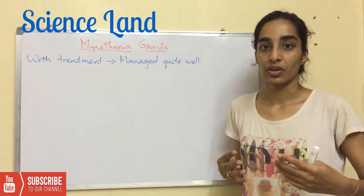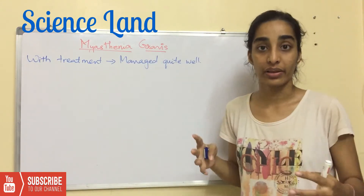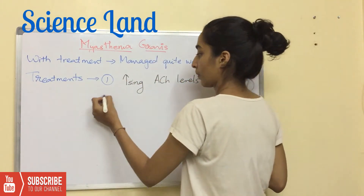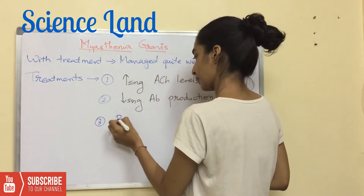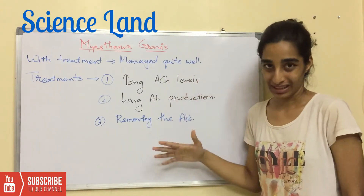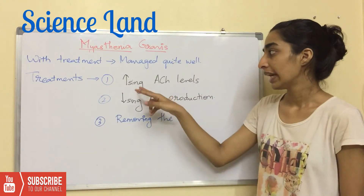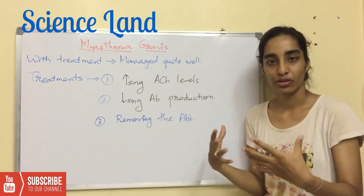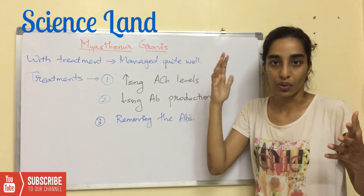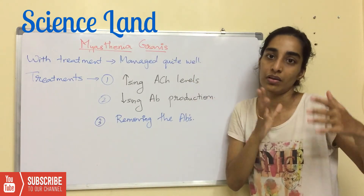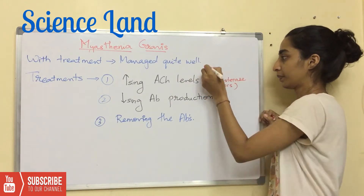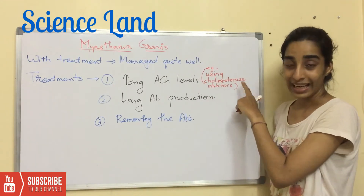If treatment is given to the patient, the patient will manage quite well and will lead a normal life. Three different treatments can be given. The first one is increasing the acetylcholine level. If the patient is producing acetylcholine and autoantibodies, we increase the quantity of acetylcholine so that it surpasses the quantity of the autoantibody. This is done by using cholinesterase inhibitors.